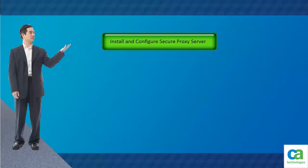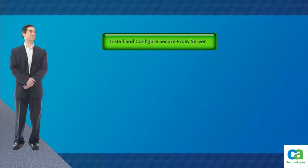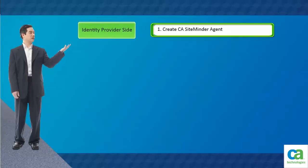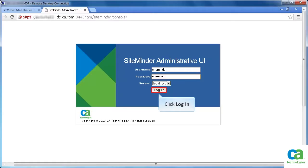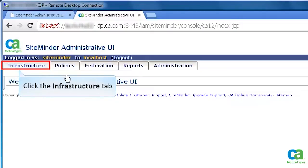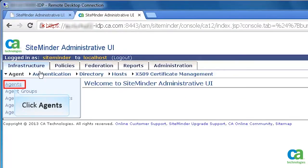To learn more, click the Install and Configure Secure Proxy Server button. Now, let's start with the configuration of identity provider side. The first step is to create an agent. Open the CA SiteMinder administrative UI. Specify the login credentials and click Login. Click the Infrastructure tab. Under Agent, click Agents.